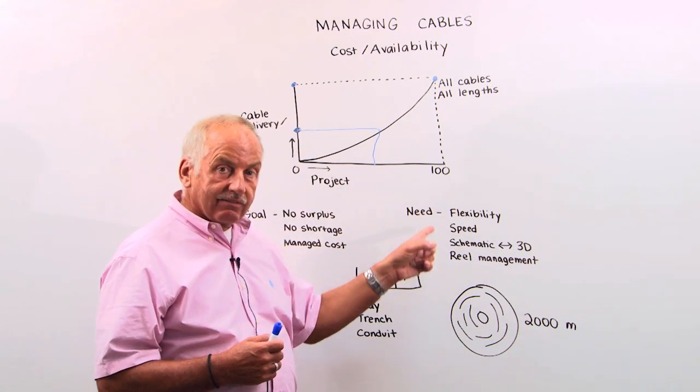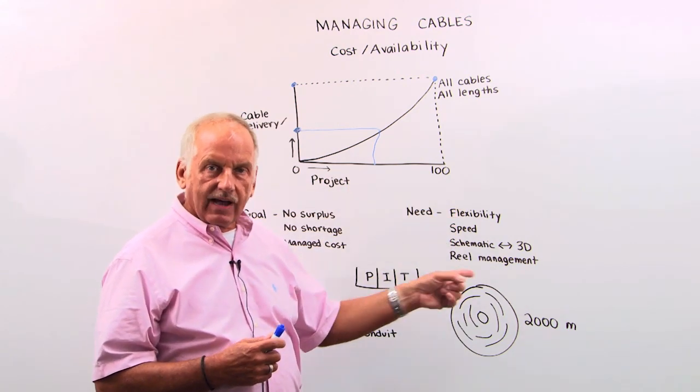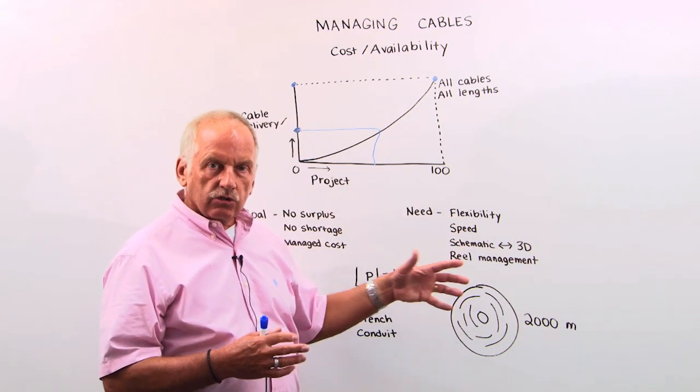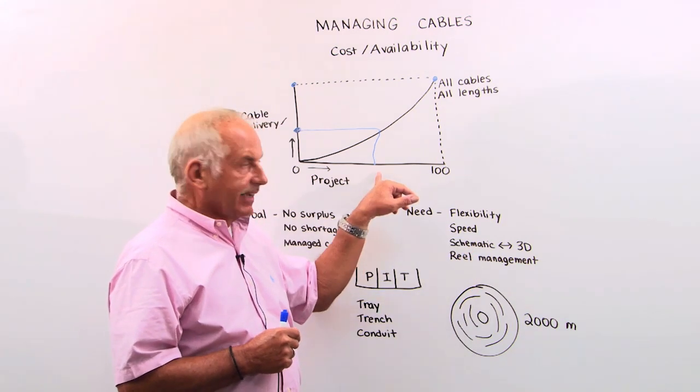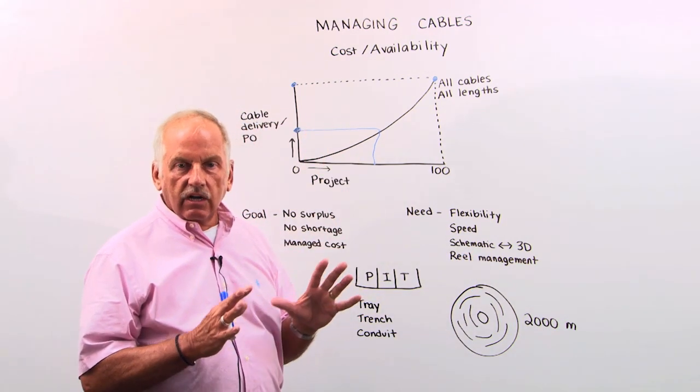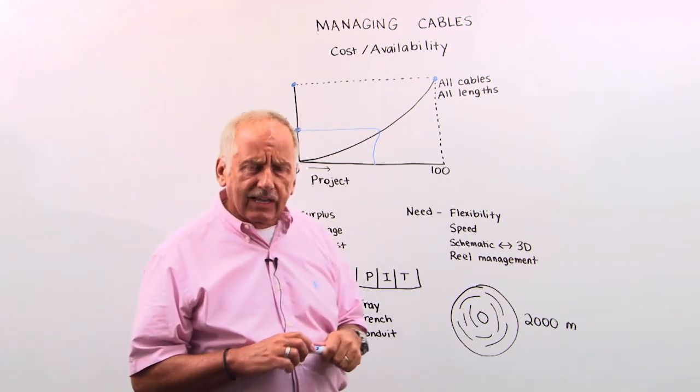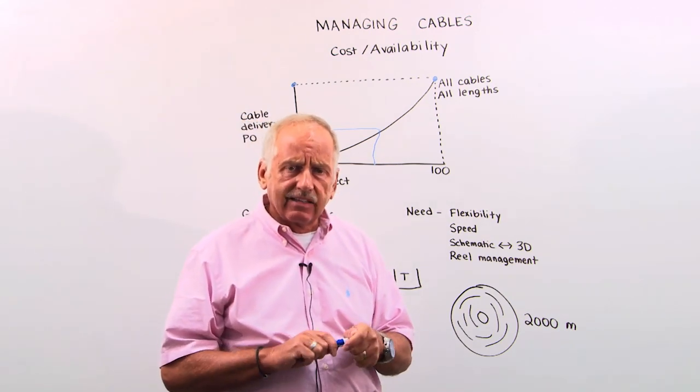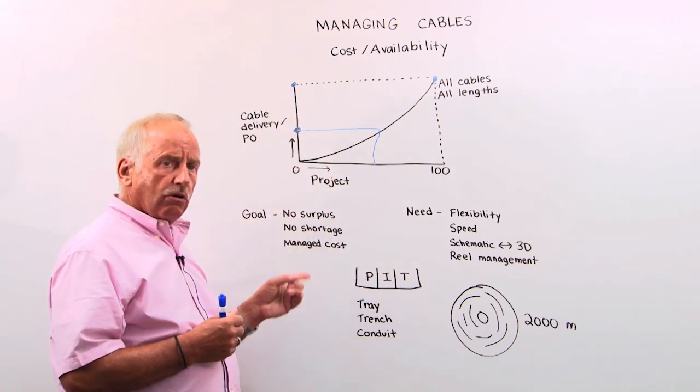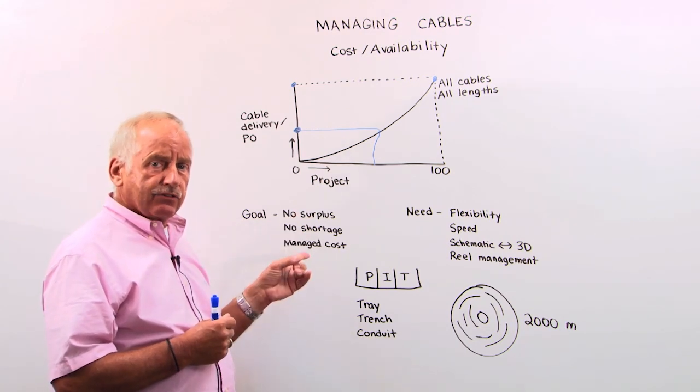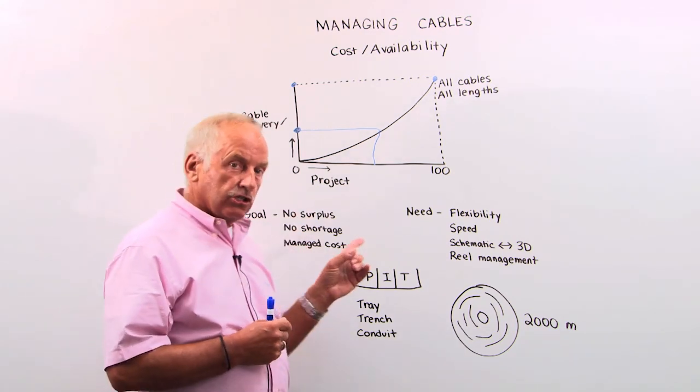But the flexibility and the speed need to be there once the final location is determined to tweak that and come up with the final length and maybe change a little bit the purchase order to make sure that you get the right information or the right length and the right quantity there. Because remember, our goal is, we don't want any leftovers, but also we don't want any shortage.